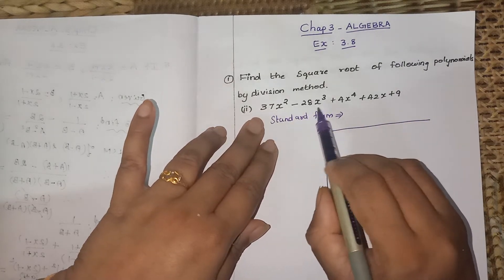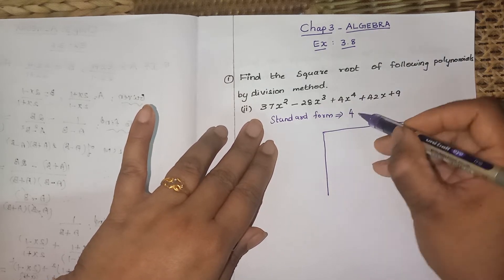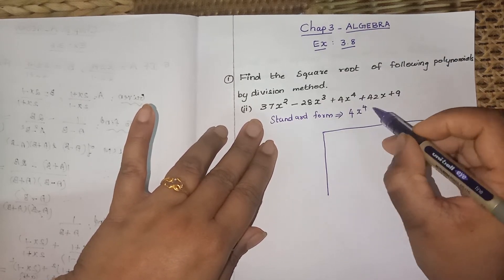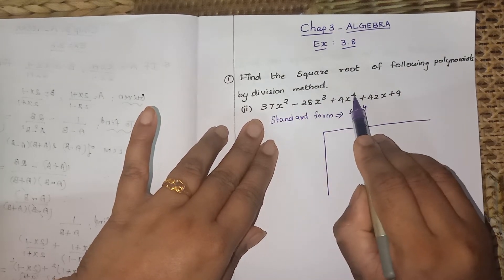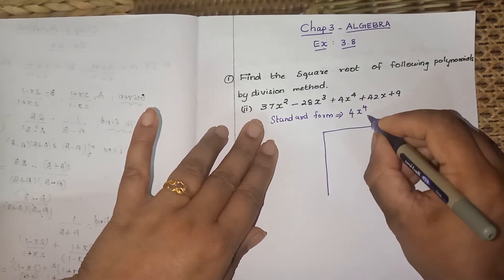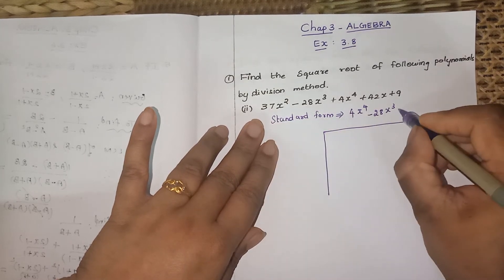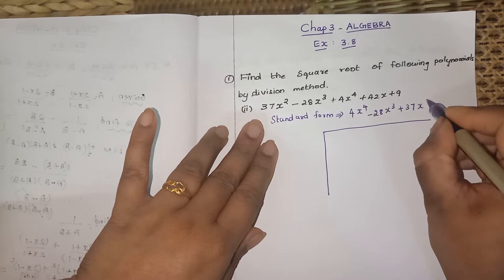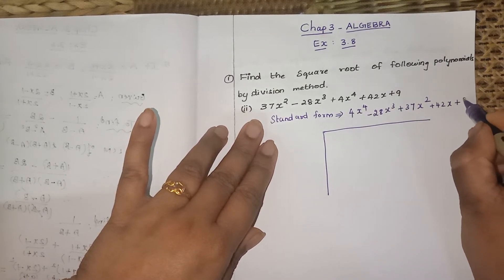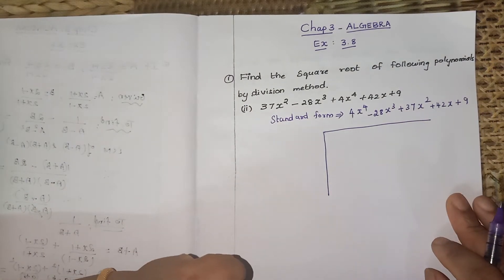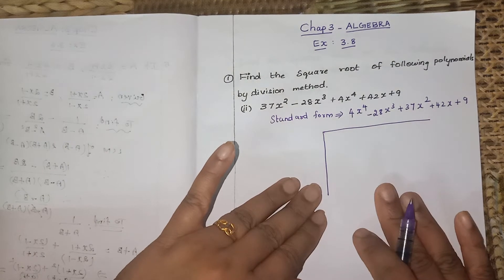I'm going to write it in descending order, highest power first. So: 4x⁴, then minus 28x³, then plus 37x², then plus 42x, then plus 9 as the constant. Please don't make mistakes — always check the order before going to the division method.